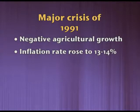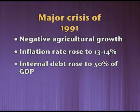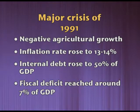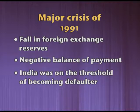The second factor was the inflation rate, which rose to 13 to 14%. Internal debt rose to 50% of GDP. Fiscal deficit reached around 7% of GDP. There was a fall in foreign exchange reserves, a negative balance of payment, and India was on the threshold of becoming a defaulter. As a result, State Bank of India and Reserve Bank of India sold gold in the internal and external market, showing the government was under intense pressure.